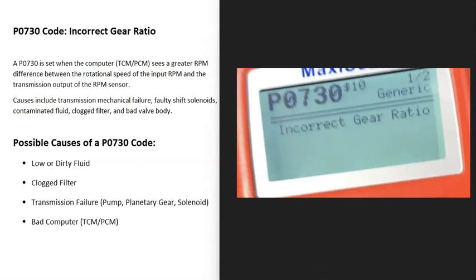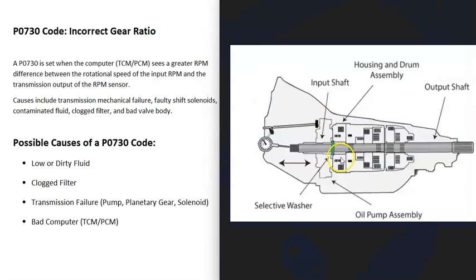Today I'm talking about a P0730 code — what it is and how you go about fixing it. A P0730 code is an incorrect gear ratio.